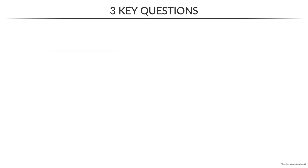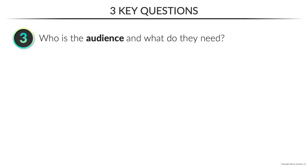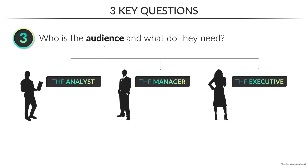That takes us to our third question: who is the audience and what do they need? One of the most common mistakes people make is that they design based on what they want to build, not what their audience needs to see. Designing effective visuals requires empathy and an understanding of who your audience is and exactly what they're looking for. The analyst tends to be someone who wants detail — they like to understand what's going on at a granular level, so they're likely to respond well to things like data tables or combo charts with enough detail to support root cause analysis.